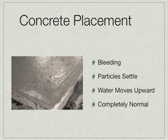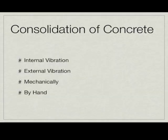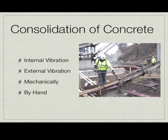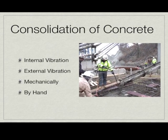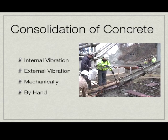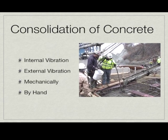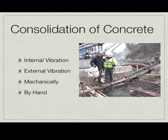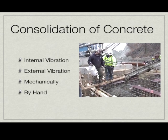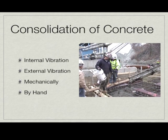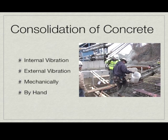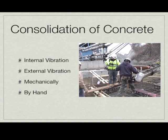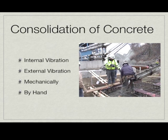We also want to make sure that we properly cure the concrete. We cannot have proper placement unless we have proper consolidation. Consolidation can take place via a vibrator, internally or externally. It can also be done by mechanical means, and on small jobs it can be done by hand. What vibration and consolidation does is reduce the friction between the particles, making the concrete a more liquid, flowable material so that it can take the shape of the mold.